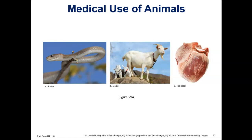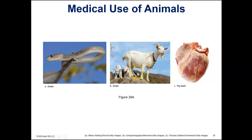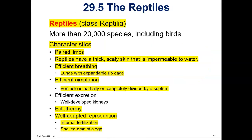There are medical uses of animals. Snake venom is used to make antivenin, which is used if someone gets bitten by a poisonous snake. Goats are used for their milk. And pig heart valves are used to replace human valves when a person needs a valve replacement.